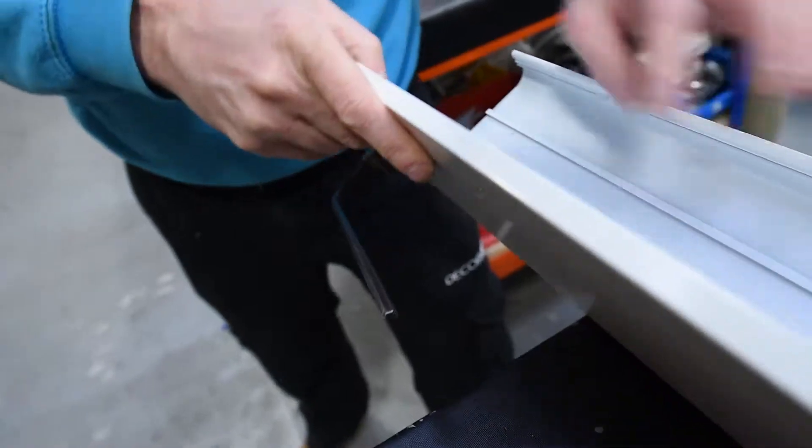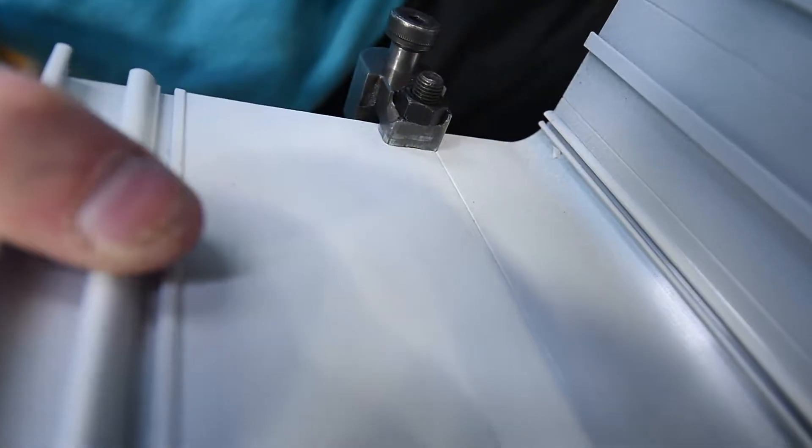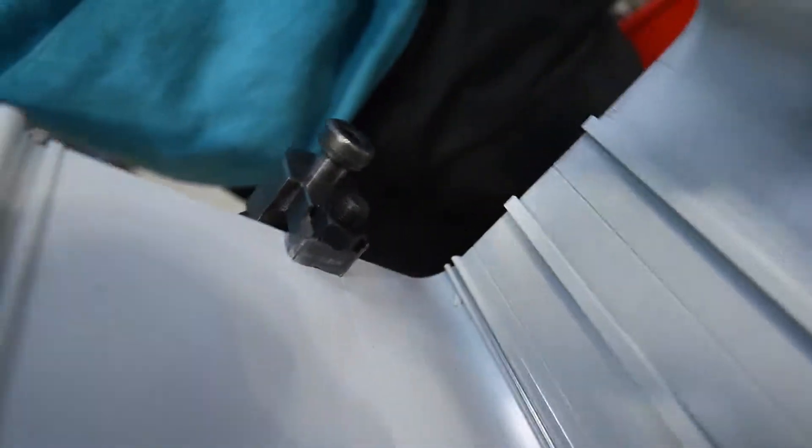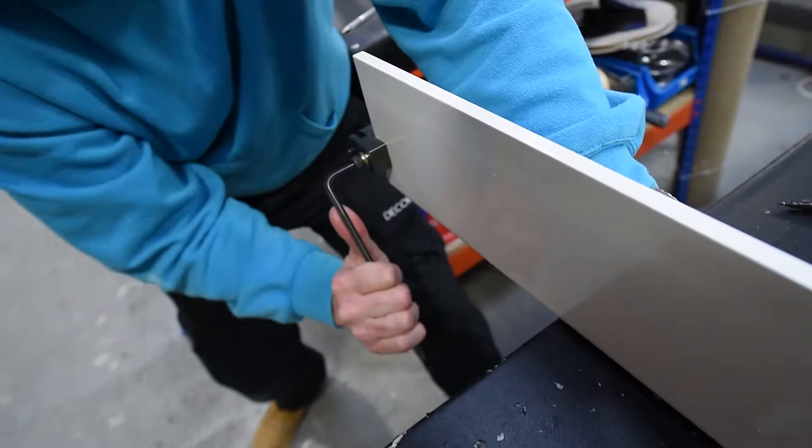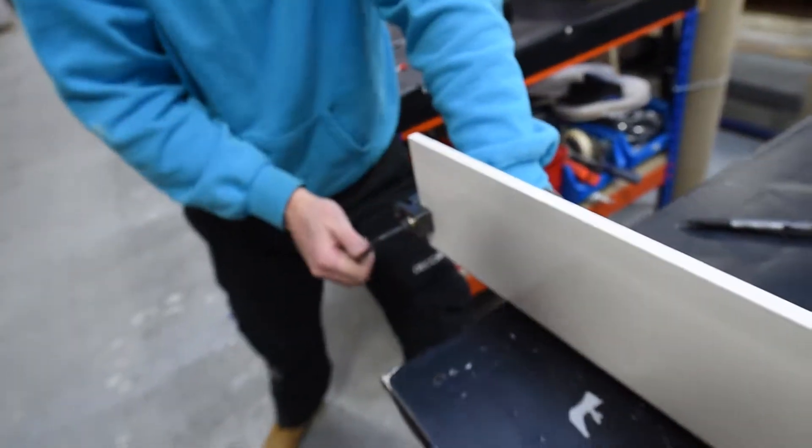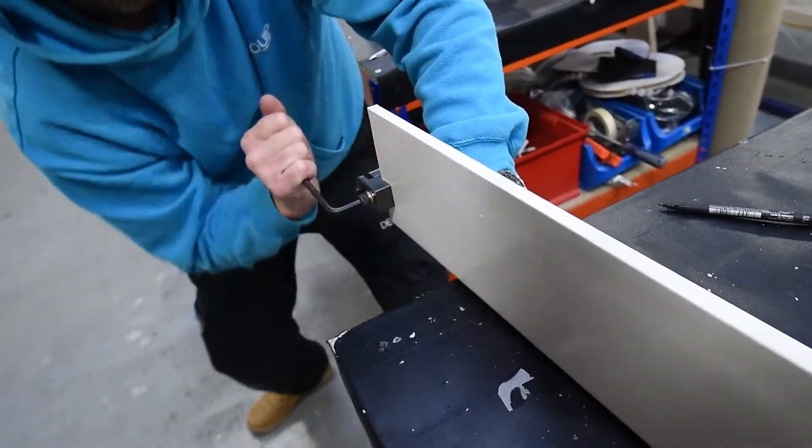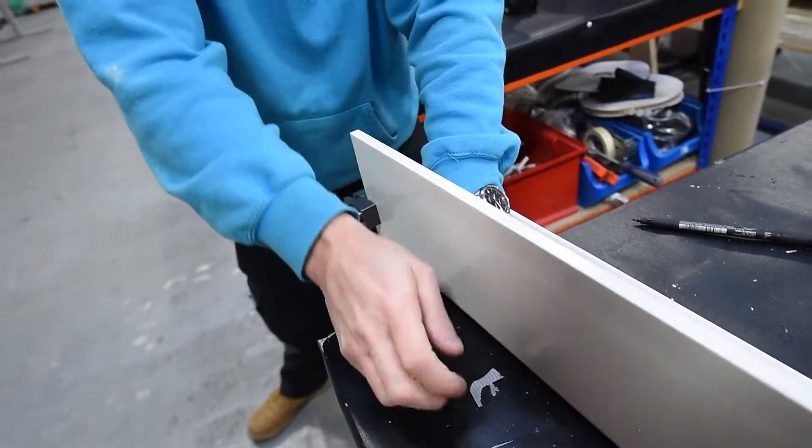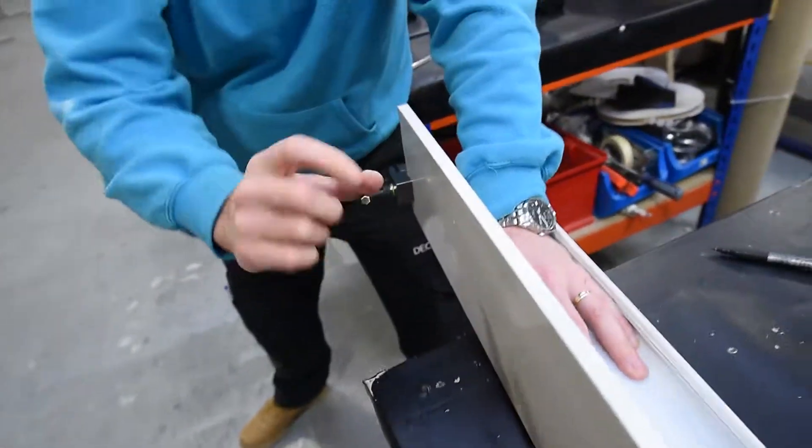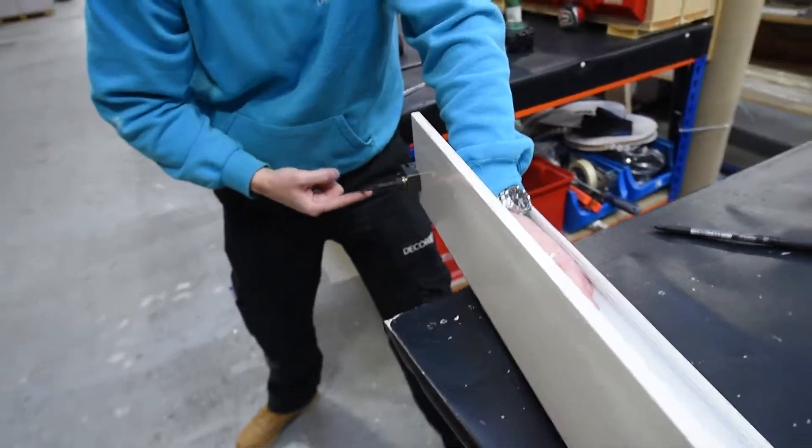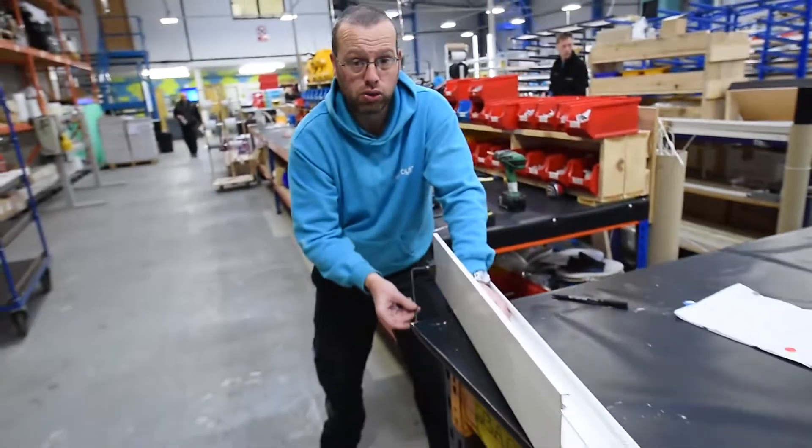As you can see from the side, keep doing that until it goes. You'll know when it goes because this will get much easier to turn. As you can see, now I can do it with one finger. That's when you know that it will punch through.